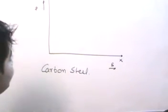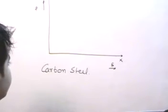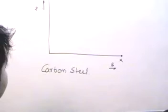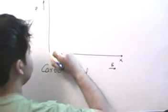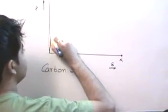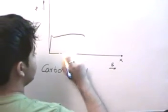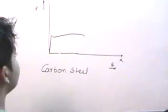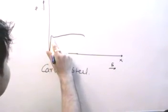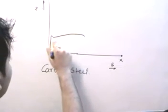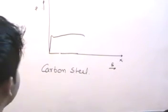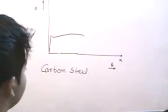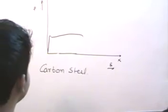Now let us take the case of carbon steel. At low percentages of carbon, the stress-strain curve is such that the material shows elastic behavior up to a certain point, and after that point there is some elongation — that is, some permanent set — before the failure point.